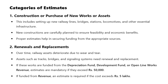Category 2: Renewals and Replacements. Over time, railway assets deteriorate due to wear and tear. Assets such as tracks, bridges, and signaling systems need renewal and replacement. If these works are funded from the Depreciation Fund, Development Fund, or Open Line Works revenue, estimates are mandatory if they exceed ₹50,000. If funded from revenue, an estimate is required if the cost exceeds ₹50,000.